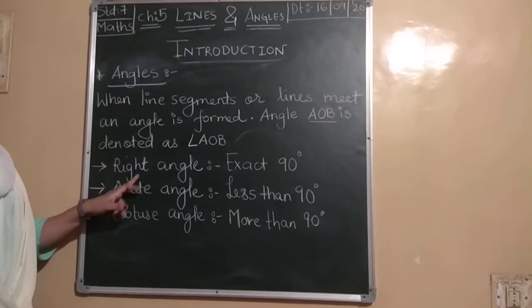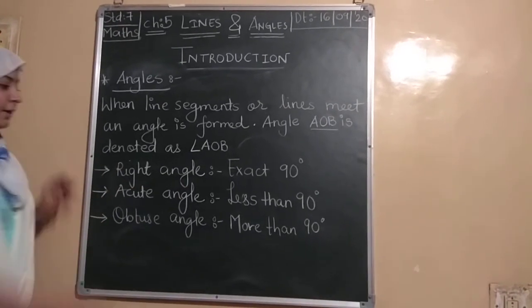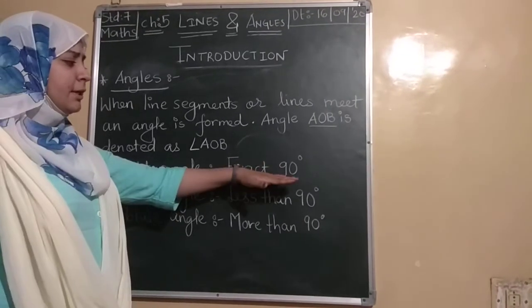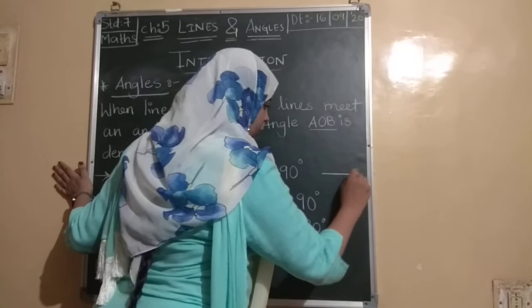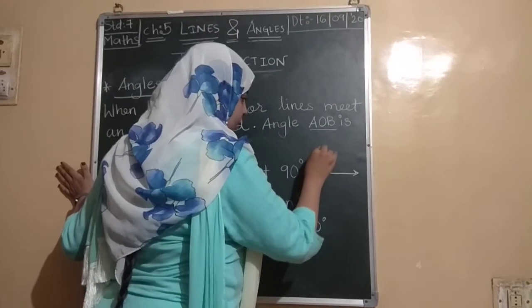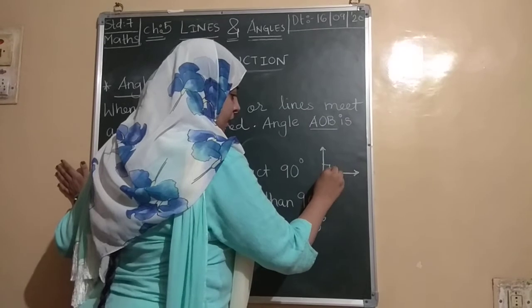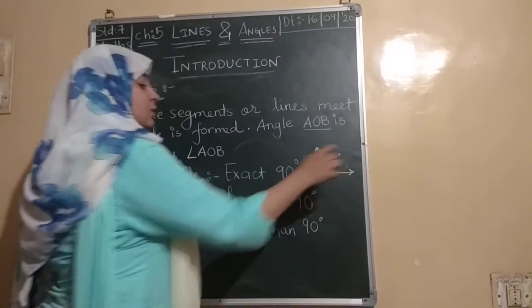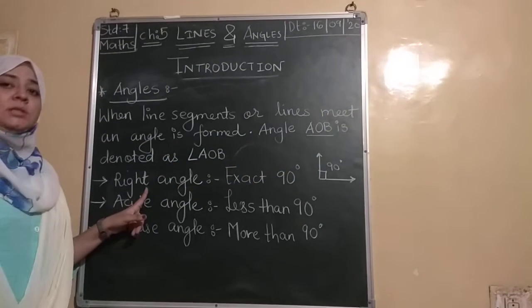Now, we will discuss about right angle, acute angle, and obtuse angle. What is right angle? An angle whose exact measurement is 90 degrees. And this angle is like this. Straight, perpendicular to each other. And the angle formed is 90 degrees. So, an angle whose exact measurement is 90 degrees, that is known as a right angle.